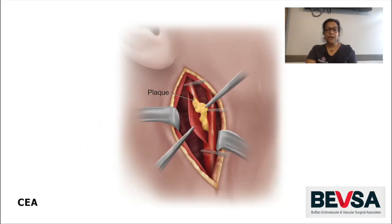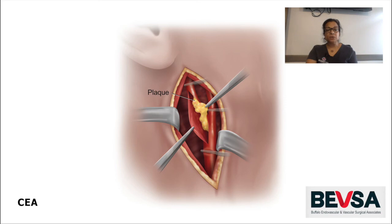Next we clamp the carotid artery after the patient has been given heparin, which is a blood thinner, so blood clotting does not occur. This prevents the blood from leaving the diseased area, after which we look at the artery closely and make sure that the clamping is done in such a way that it is only temporary. We then open the artery and clean out the plaque by using forceps or other instruments and make sure that there is no plaque loose within the artery.